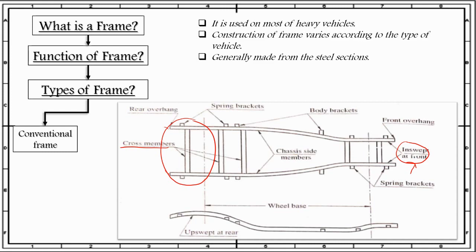The body brackets are provided to support the body of the vehicle, whereas the spring brackets are provided on the frame for mounting the springs. The extension of the chassis frame ahead of the front axle is known as the front overhang, while its extension beyond the rear is known as the rear overhang.